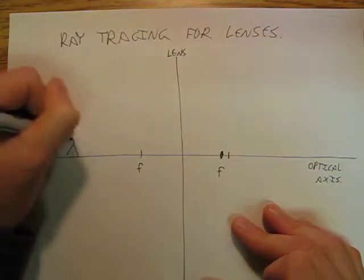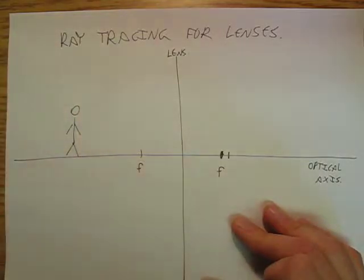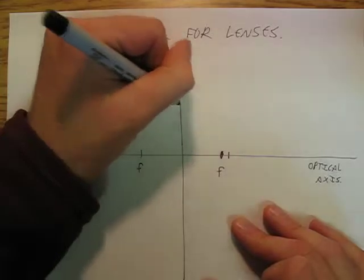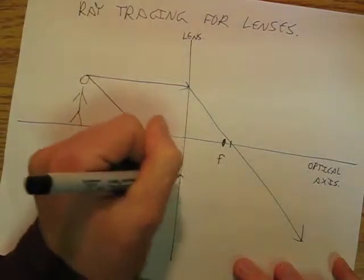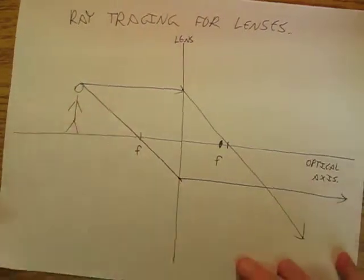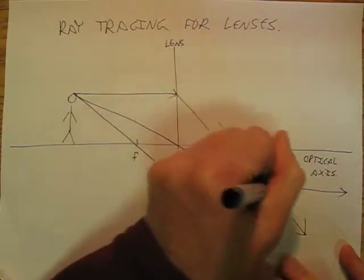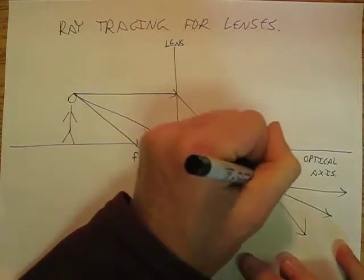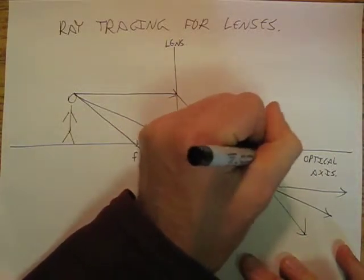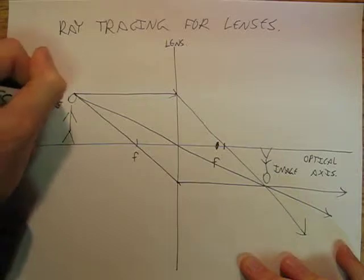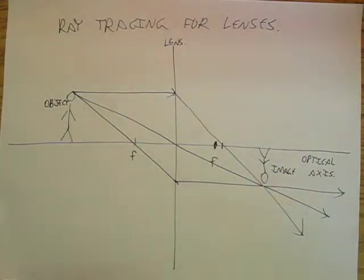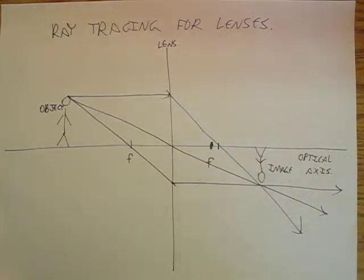And then we will have some little person here and we're going to have three rays of light: in parallel, out through the focus; in through the focus, out parallel; and then through the center of the lens. And they're all going to meet up and then over here we're going to have my image. Okay and so we're going to do some example problems, just like the other one we're going to do probably four example problems.